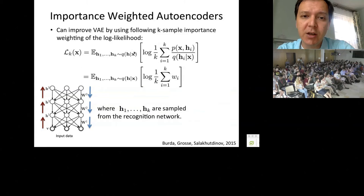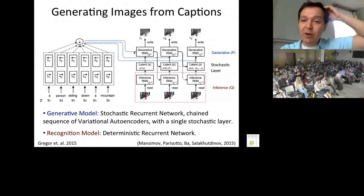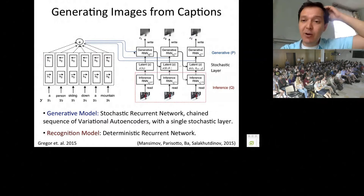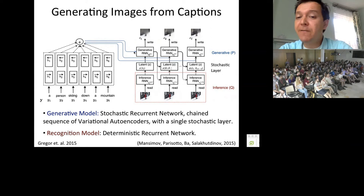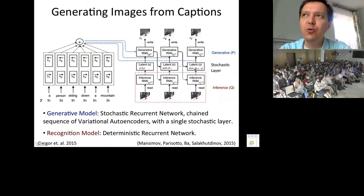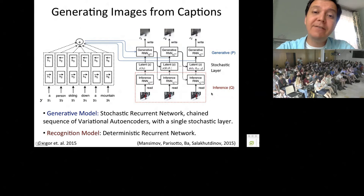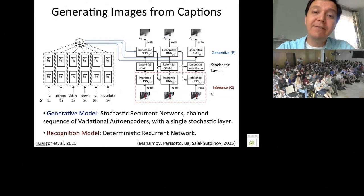Let me show one example of where these models can be used: generating images from captions. Given a description, can I generate the image? You can think of this model as a stochastic recurrent network or a chain of variational autoencoders, where each column is a VAE chained through a latent variable Z. You have a generative model and a recognition model — an instance of a VAE — but conditioned on the text, using a recurrent network to get sentence representations.